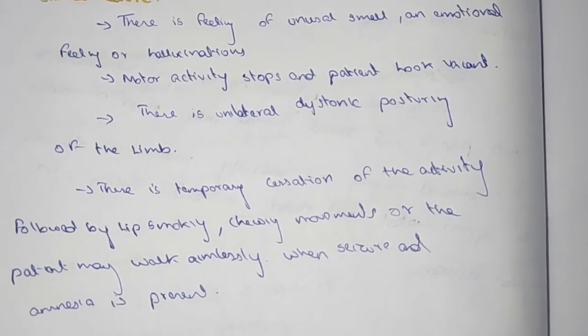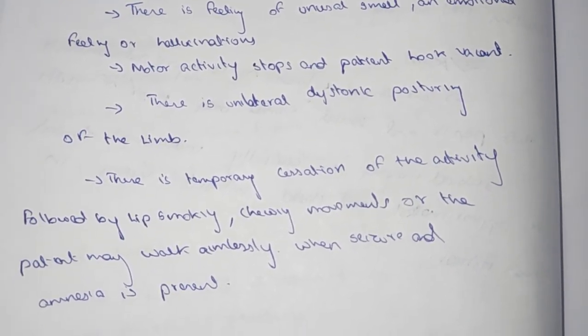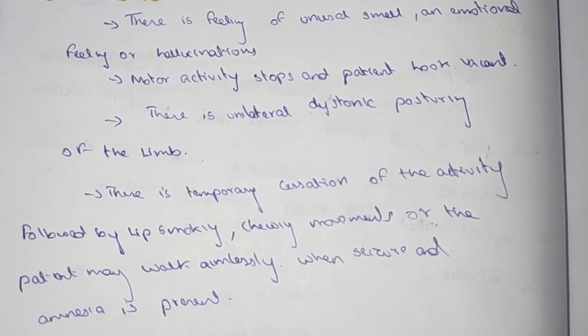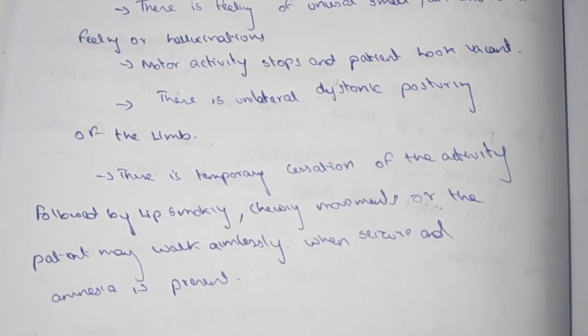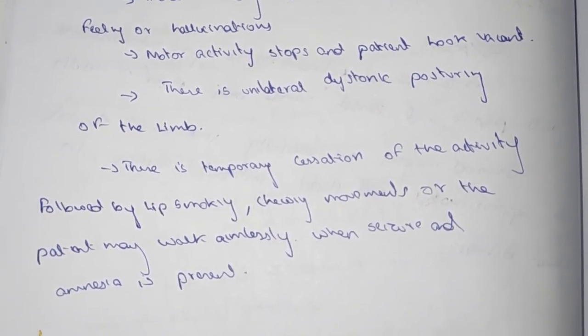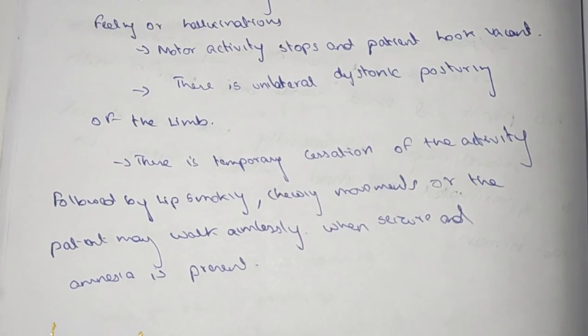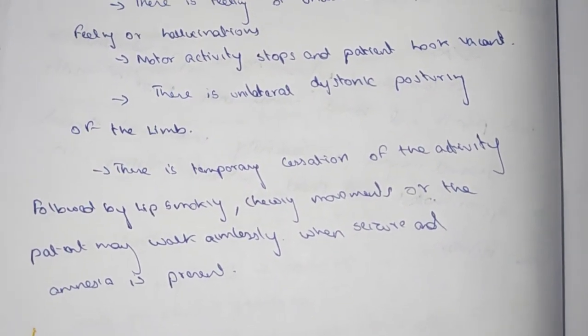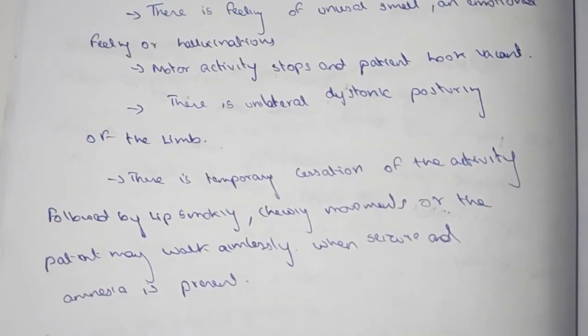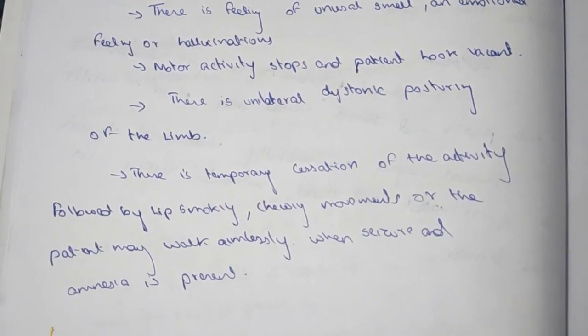There is unilateral dystonic posturing of limbs. There is temporary cessation of activity followed by lip smacking and chewing movements. The patient may walk aimlessly when seizure occurs and amnesia is present.